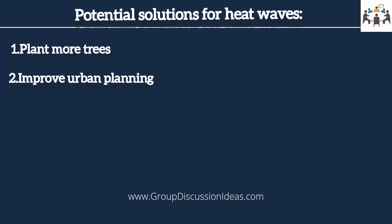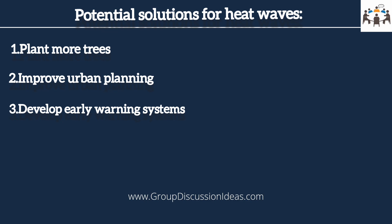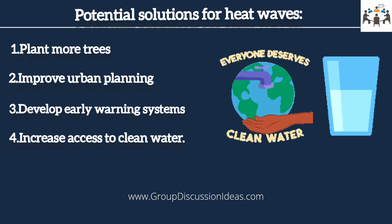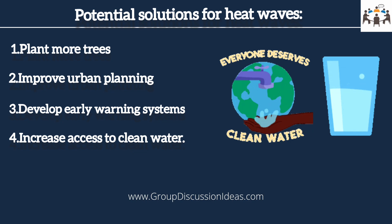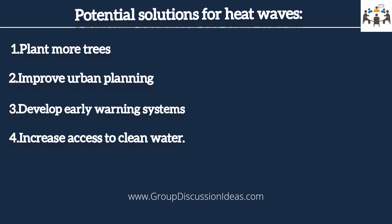Governments can develop early warning systems to alert people to the dangers of heat waves, including weather forecasts, public announcements, and education campaigns. Access to clean water should also be increased — during heat waves, people need to stay hydrated to avoid heat-related illness, and governments can ensure that clean drinking water is available to everyone, especially vulnerable populations.